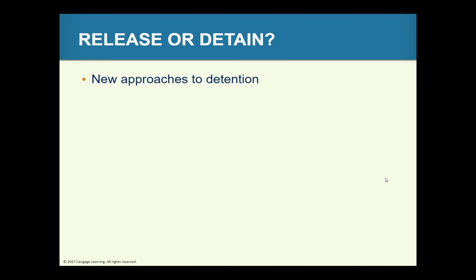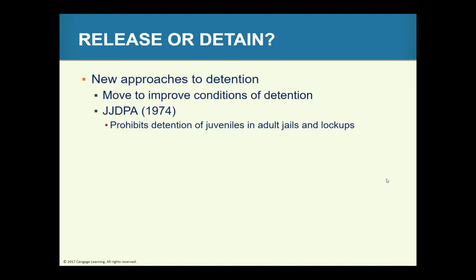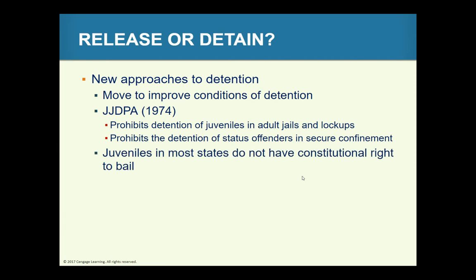There are important laws and guidelines in this area. In 1989, the Juvenile Justice and Delinquency Prevention Act was amended and required states to remove all juveniles from adult jails and lockups. Federal guidelines require that juveniles in state custody be separated from adult offenders, or the state could lose their federal juvenile justice funds. The OJJDP has made this deinstitutionalization of status offenders a cornerstone of its policy.